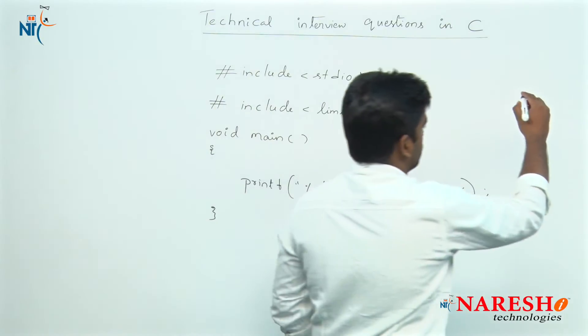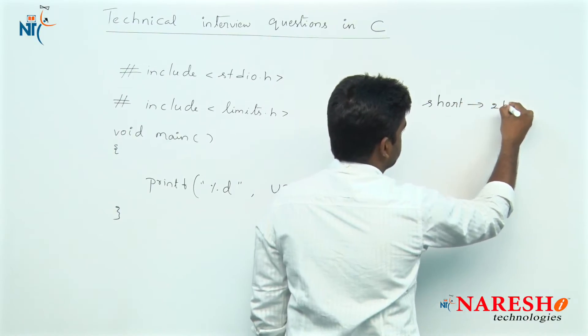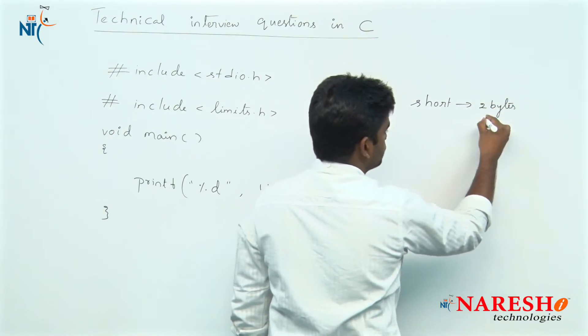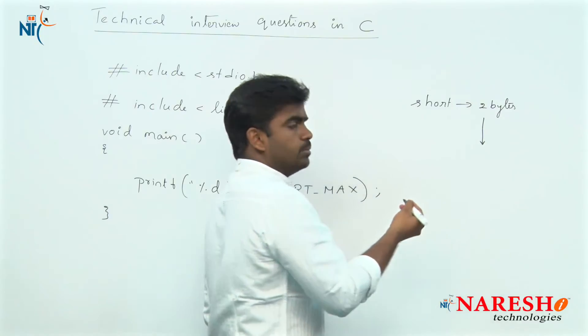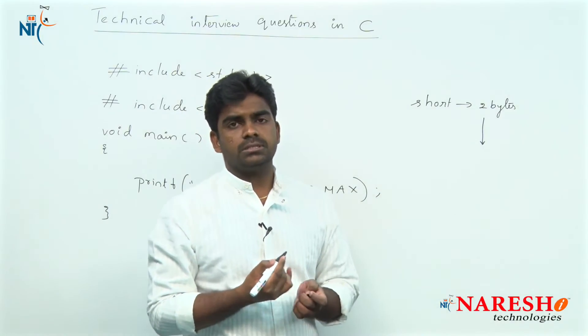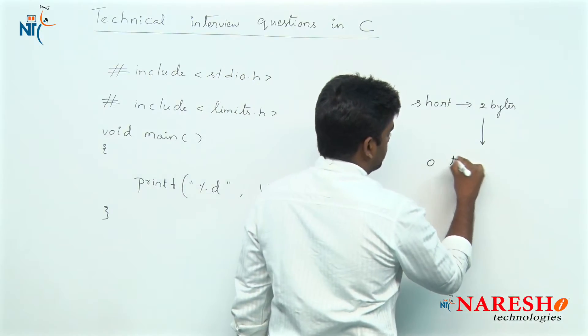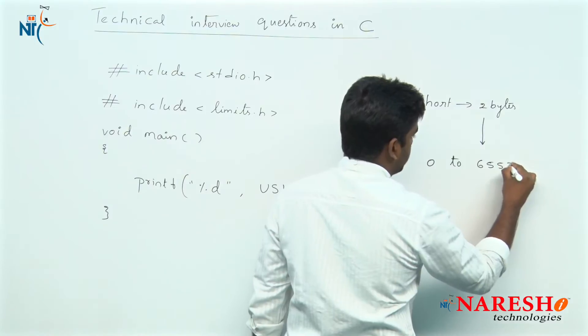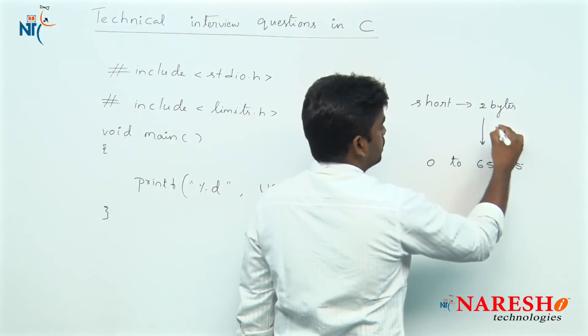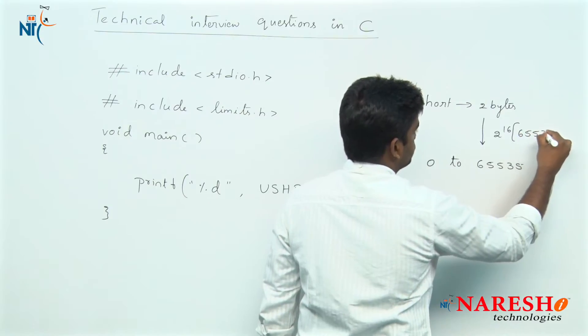Short occupies 2 bytes. The maximum value we can store if it is unsigned starts with 0 and goes up to 65,535 because 2 bytes means 2 power 16, the max value is 65,536.